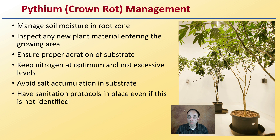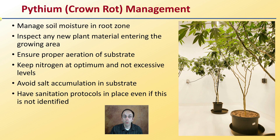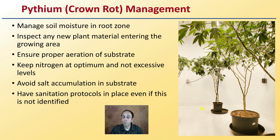To manage pythium or crown rot, you want to manage soil moisture in the root zone and inspect any new plant material entering the growing area for disease as well as insects. Ensure proper aeration of the substrate, keep nitrogen at optimum but not excessive levels, and avoid salt accumulation within the substrate to prevent plant stress. Have sanitation protocols in place even if pythium is not identified — implementing those protocols proactively should eliminate the chance of seeing it in your subsequent crop, particularly in indoor locations.